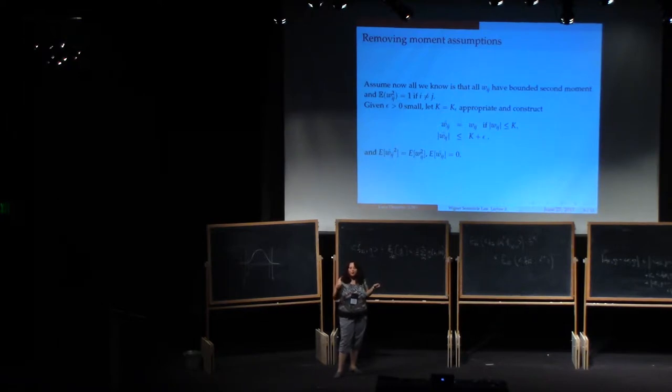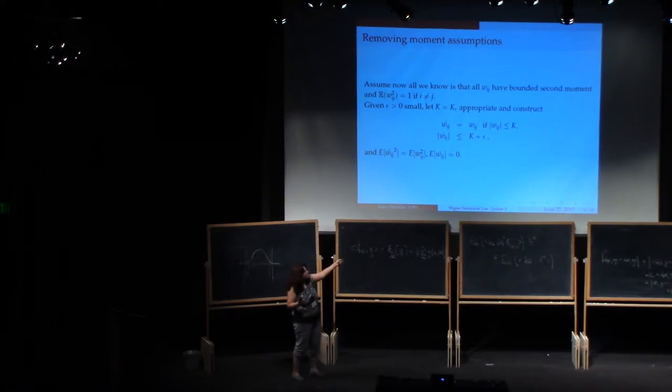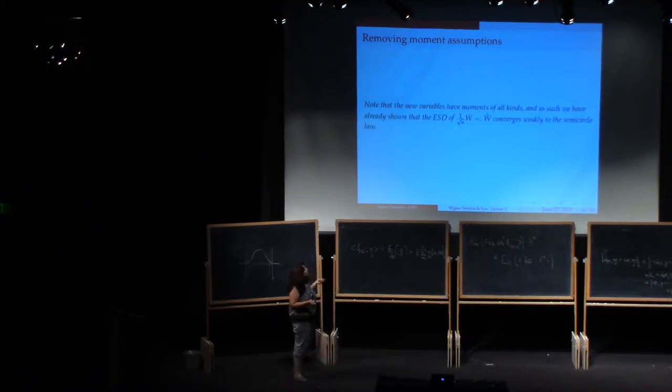And therefore for them we will be able to apply the Wigner semicircle law and conclude that their ESDs, the ESDs of the matrix defined with the new variables with hats, does converge to the semicircle law. Have I said anything surprising up to this point? So that's the gist of it. I'm going to define these new W hats, and then I'm going to want to show that the ESDs of the matrix defined with the Ws is very close to the ESDs of the matrix defined with the W hats. This is the approximation, truncation and approximation.